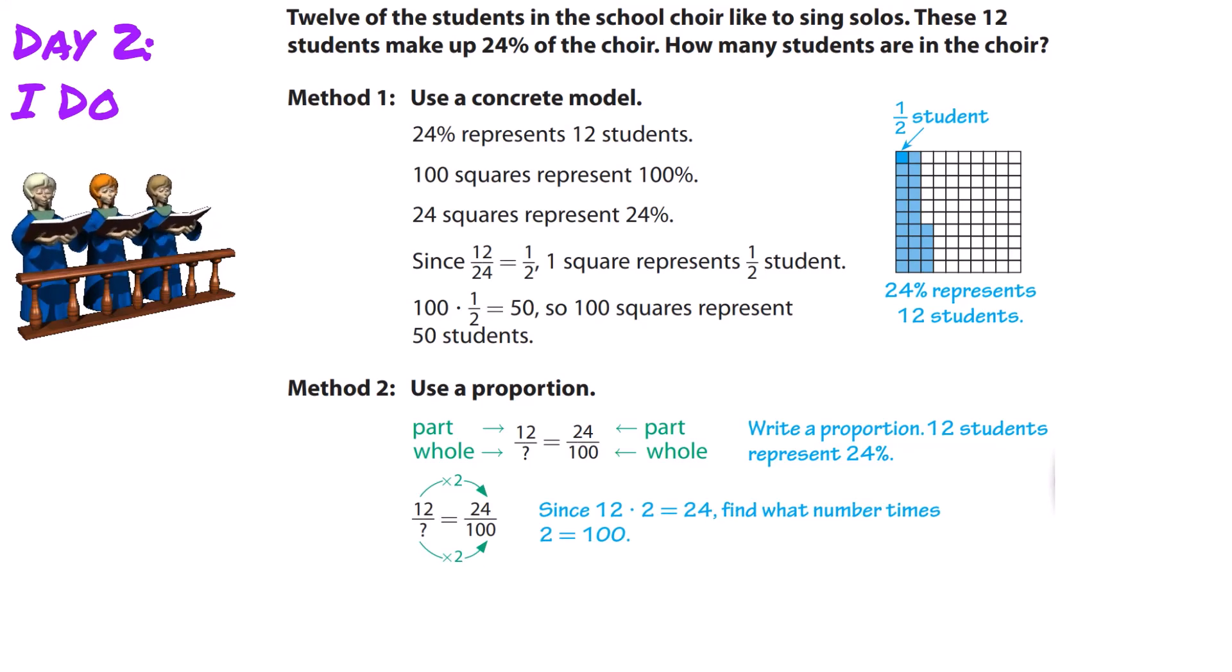Now we'll find our scale factor. How many times does 12 go into 24? 12 × 2 = 24. Now, if 2 is our scale factor, then the whole times 2 equals 100. Since 50 × 2 = 100, the whole equals 50 students.